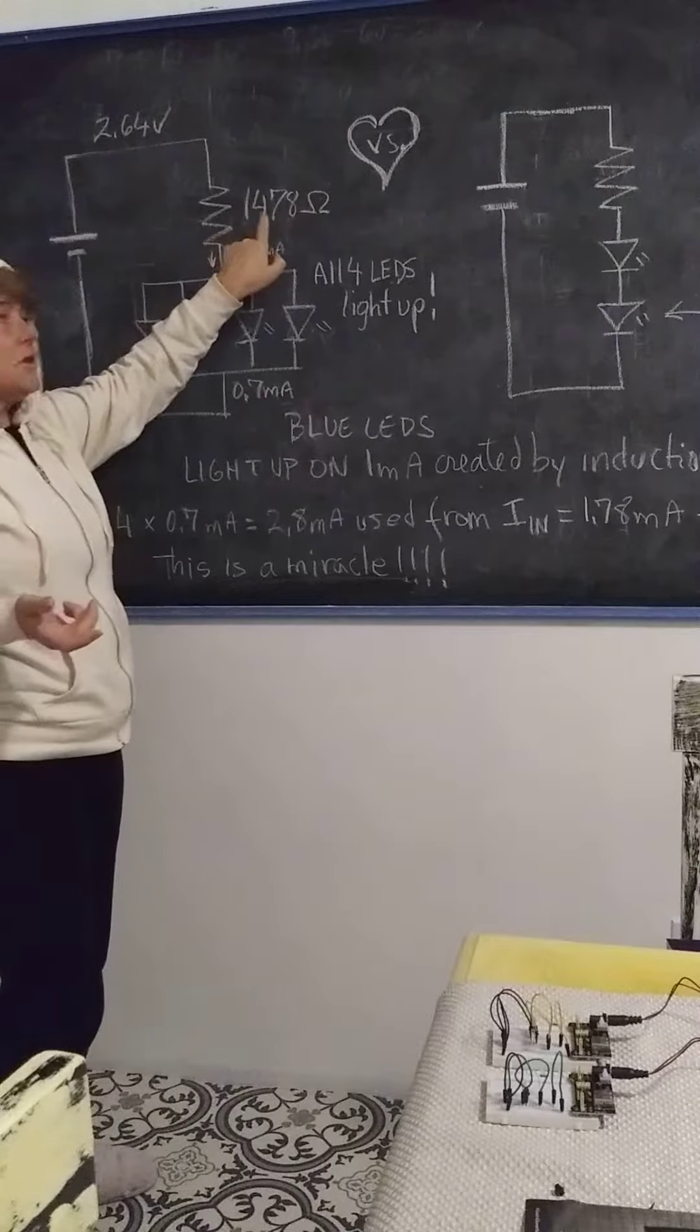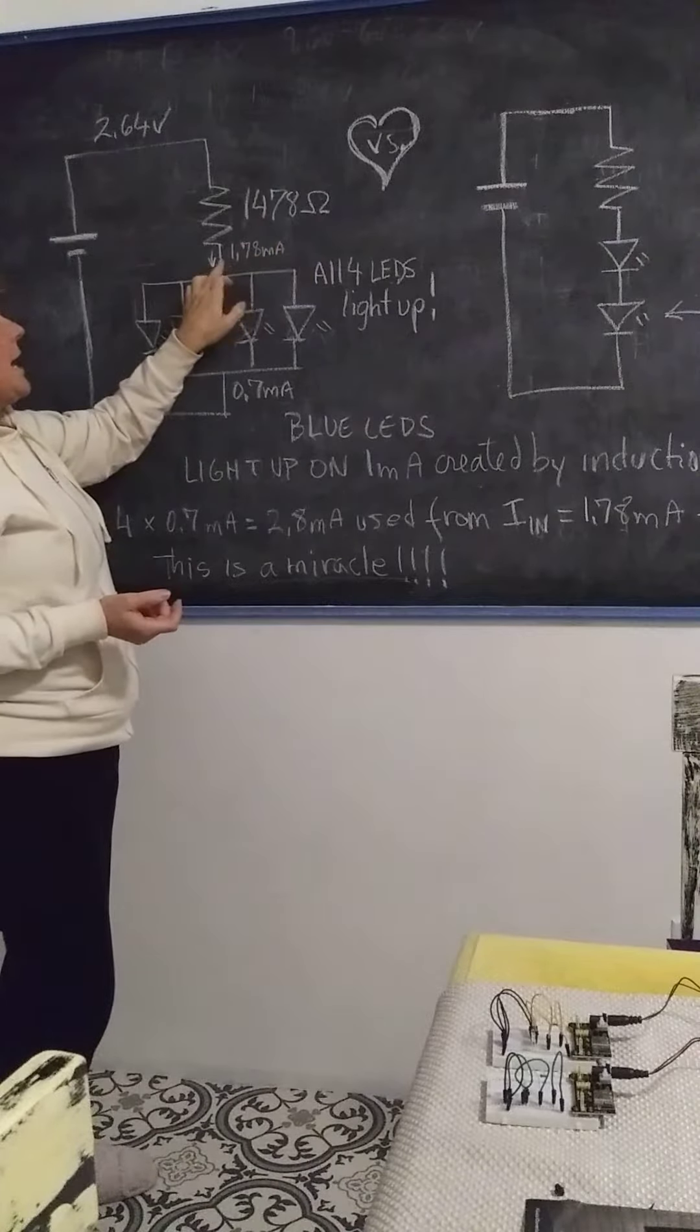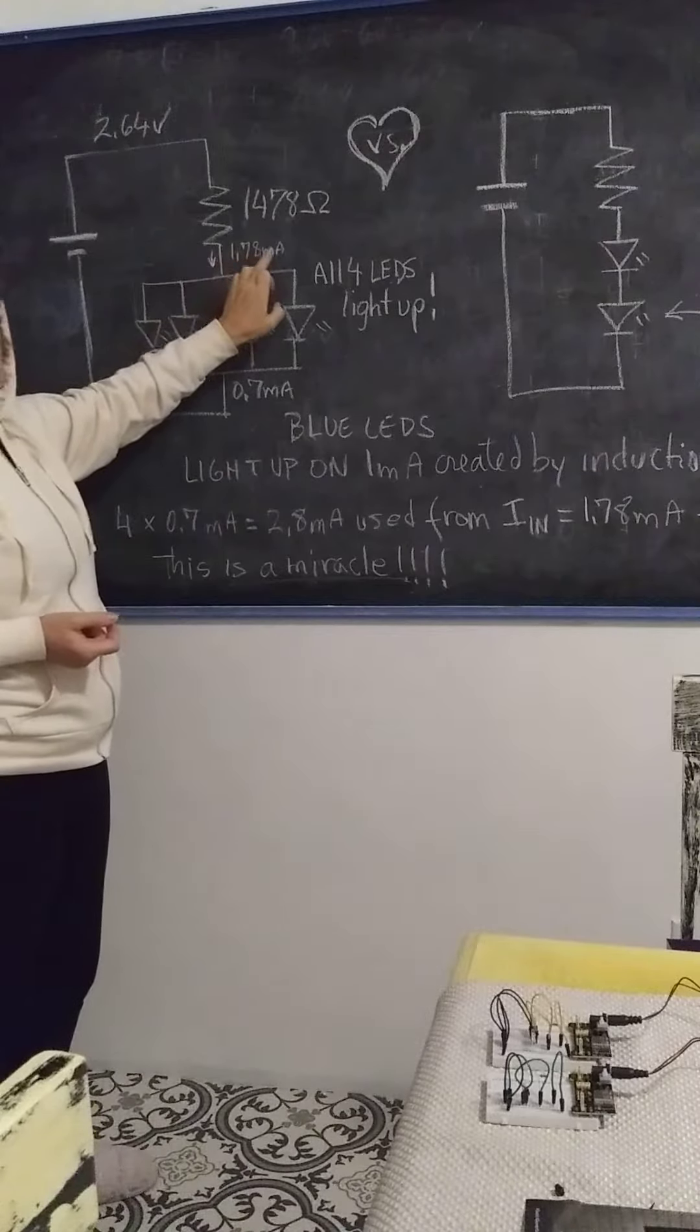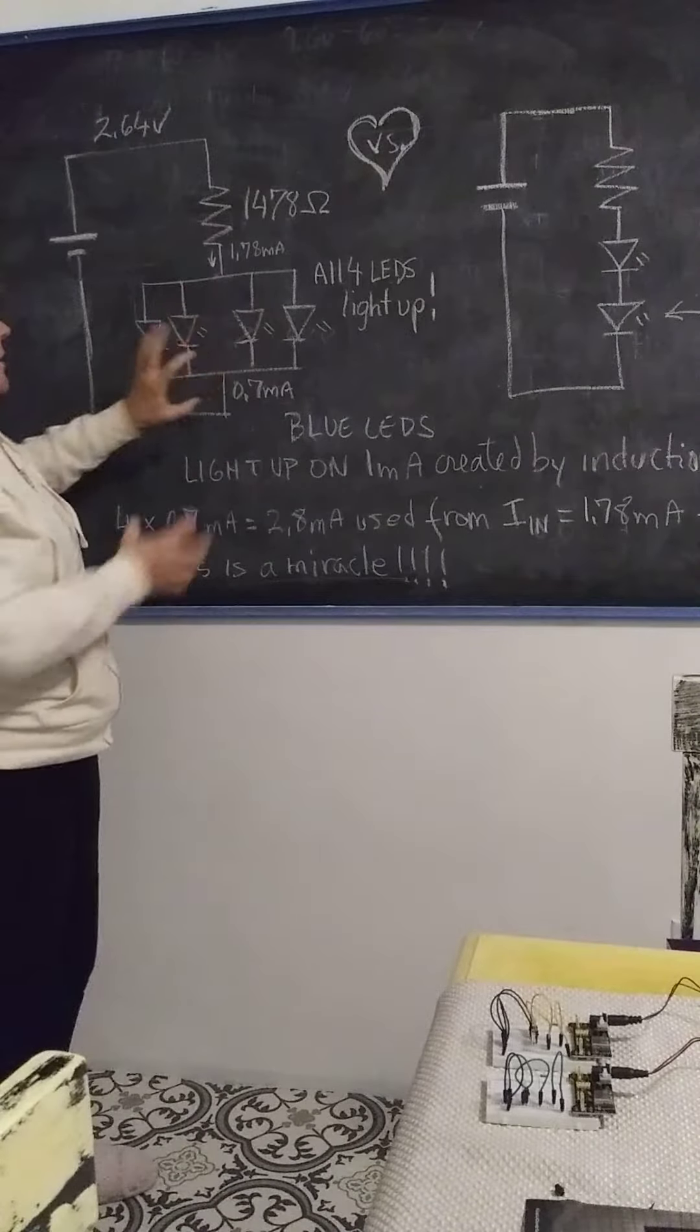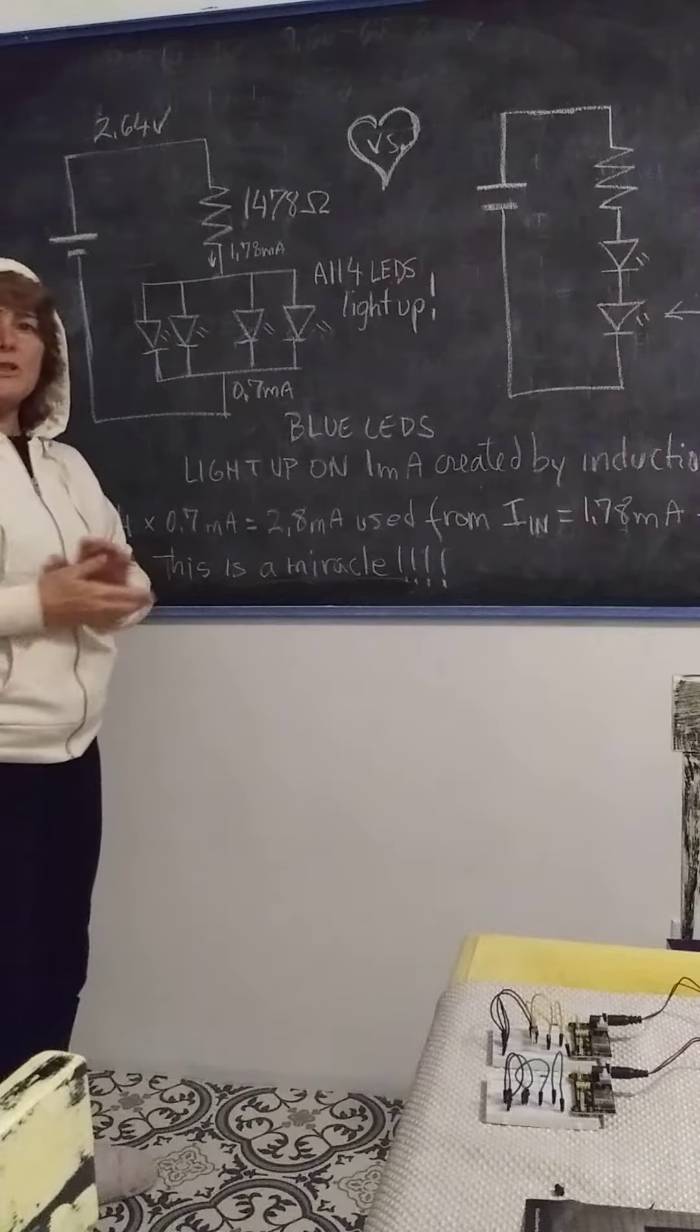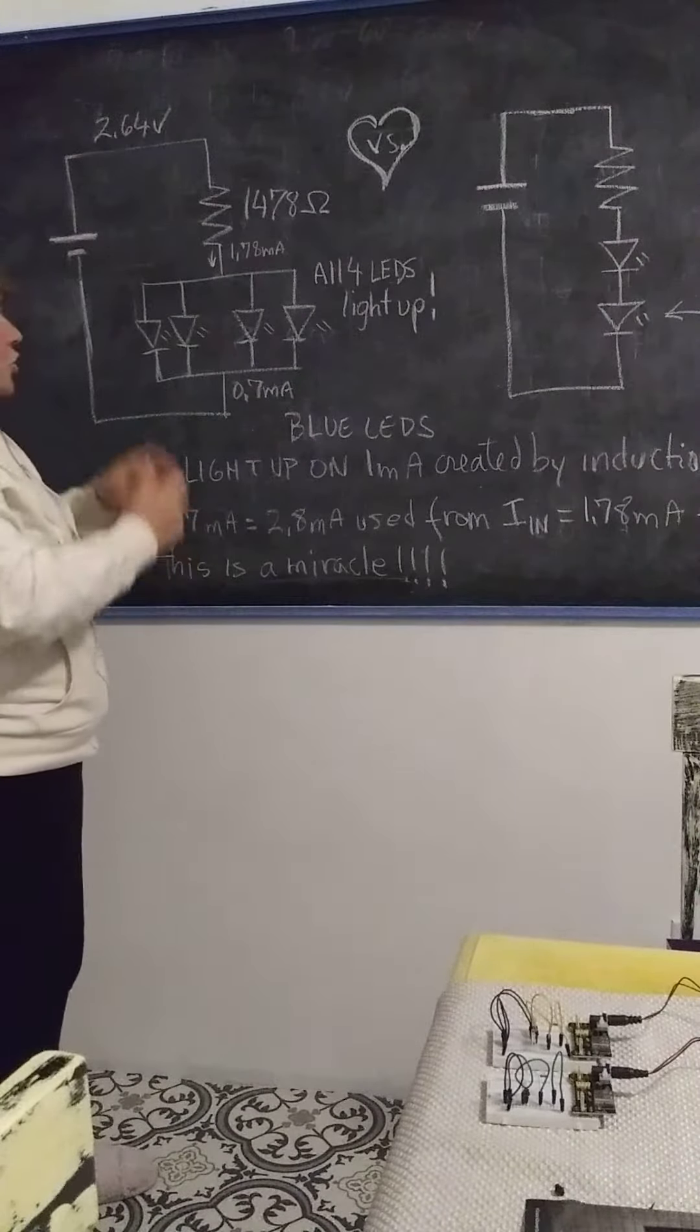a resistor of 1478 ohms, and I have a current of 1.78 milliamps going into this junction. The LEDs line up and I have a remainder of 0.7 milliamps.